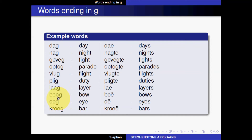The word for 'bow' in Afrikaans is 'boog,' and the plural 'bows' in Afrikaans is 'boë.' The little dots above the e — the diaeresis — are there to indicate two syllables. Without the dots, 'oe' makes an 'oo' sound, but with the dots it splits into two syllables, reading 'boë.'